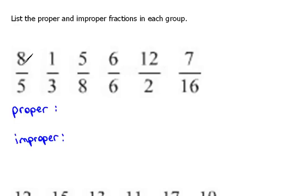8 over 5, or this is read as 8 fifths. Remember, if it's a proper fraction, the numerator is smaller than the denominator. In this case, it's larger, so this would be an improper fraction.